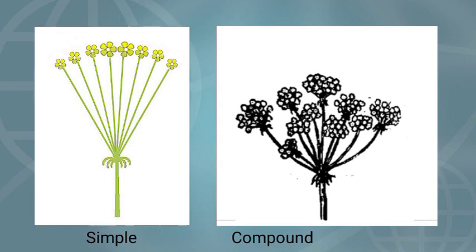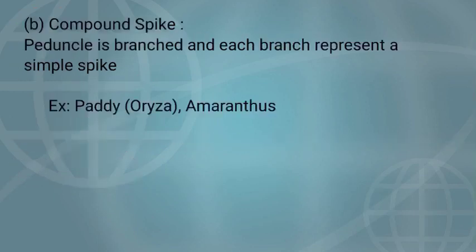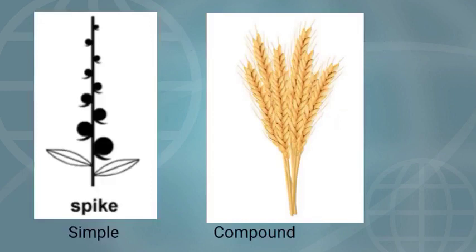Spike inflorescence is again classified into two types: simple spike and compound spike. In simple spike, an unbranched peduncle has bracteate sessile flowers. Flowers without pedicels are called sessile flowers. They are arranged in acropetal fashion. Examples: Achyranthes and Adhatoda. In compound spike, the peduncle is branched and each branch represents a simple spike. Examples: Paddy (Oryza), and Amaranthus plant. In the diagram, simple spike has bracteate sessile flowers in acropetal fashion; in compound spike, it is branched with each branch representing a simple spike.